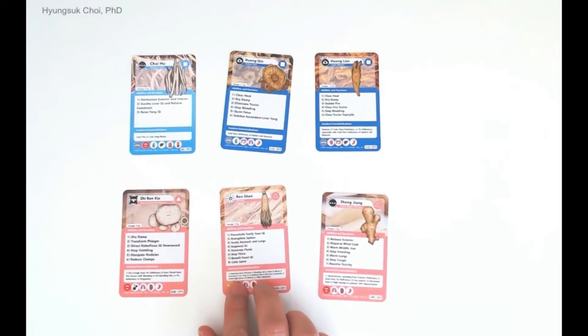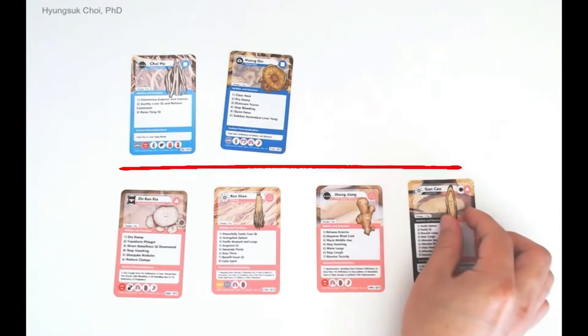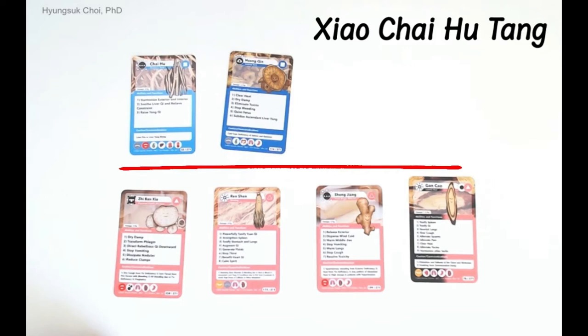Let's draw the line here. We have a cooling side and a warming side of herbs. First, let's remove Huang Nian, Ban Sha, Sen Chang, Ren Sen, and Gan Chao — this is Xiao Chai Hu Tang. It treats Xiao Yang symptoms, which are in the middle between Tai Yang and Yang Ming, and this is a commonly used formula for clearing heat.